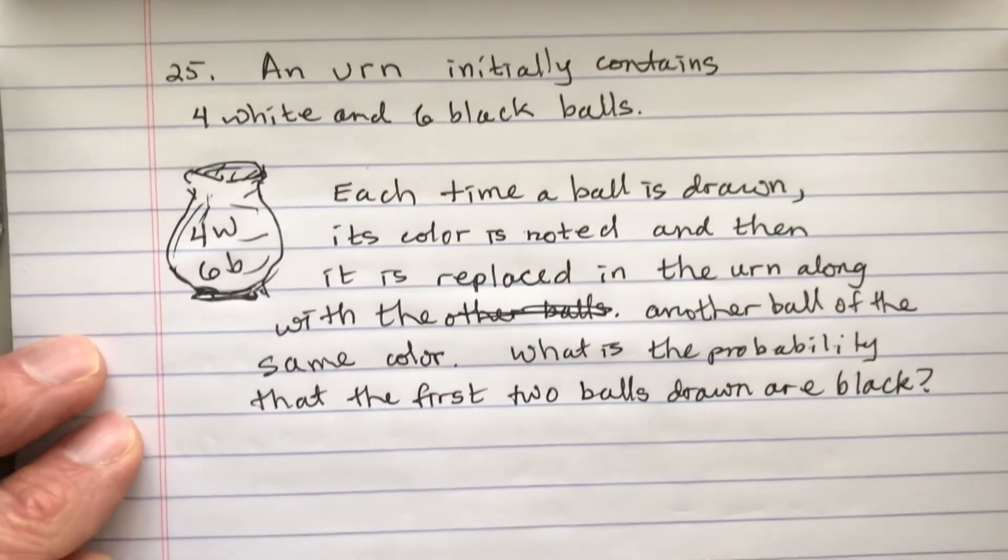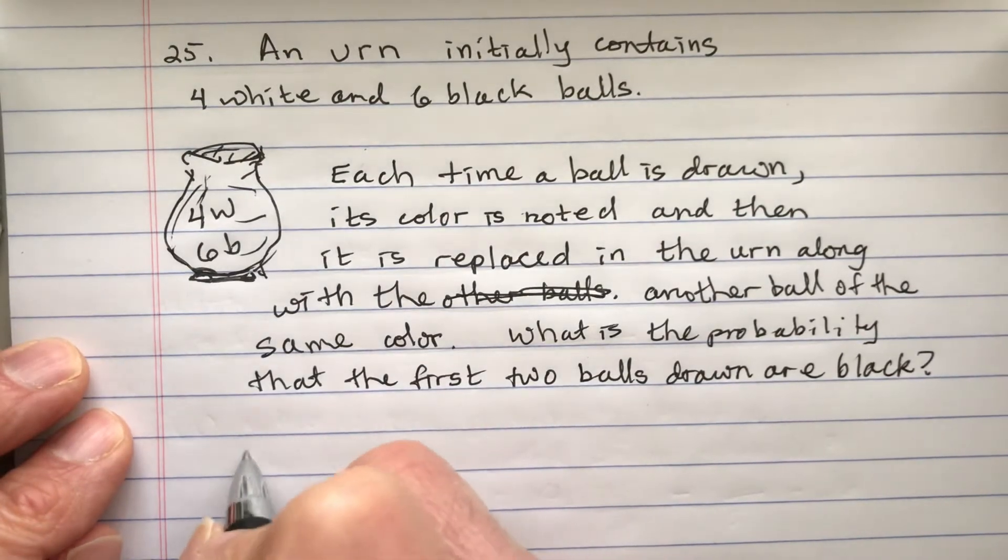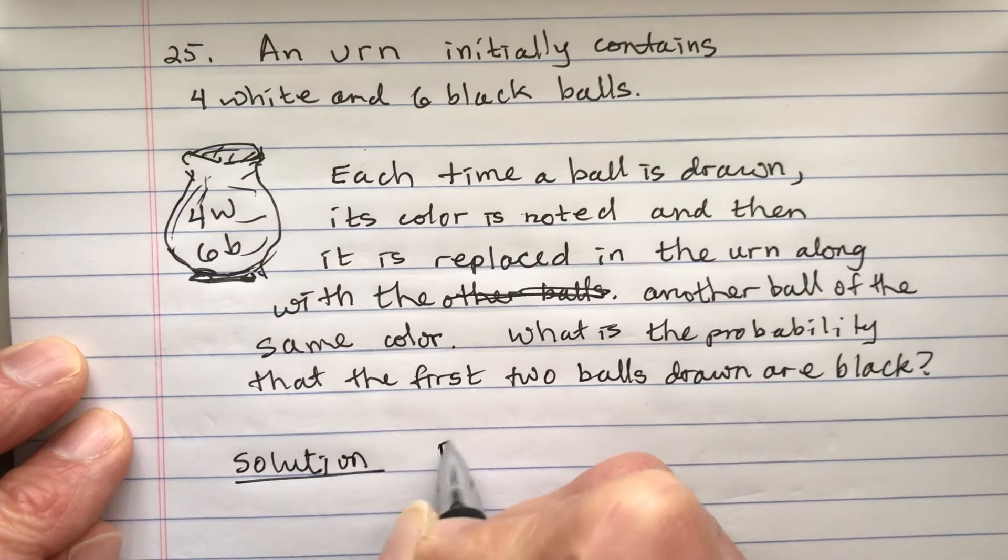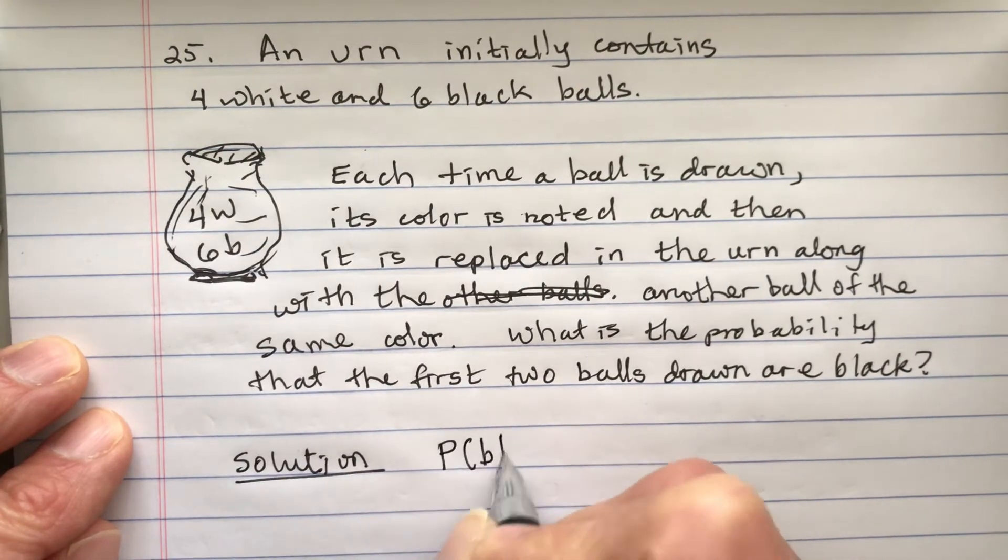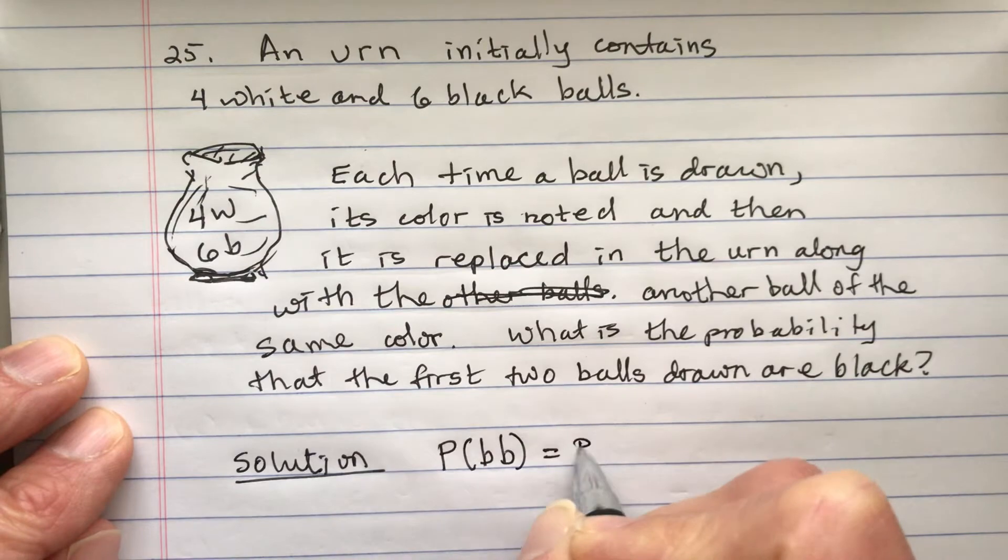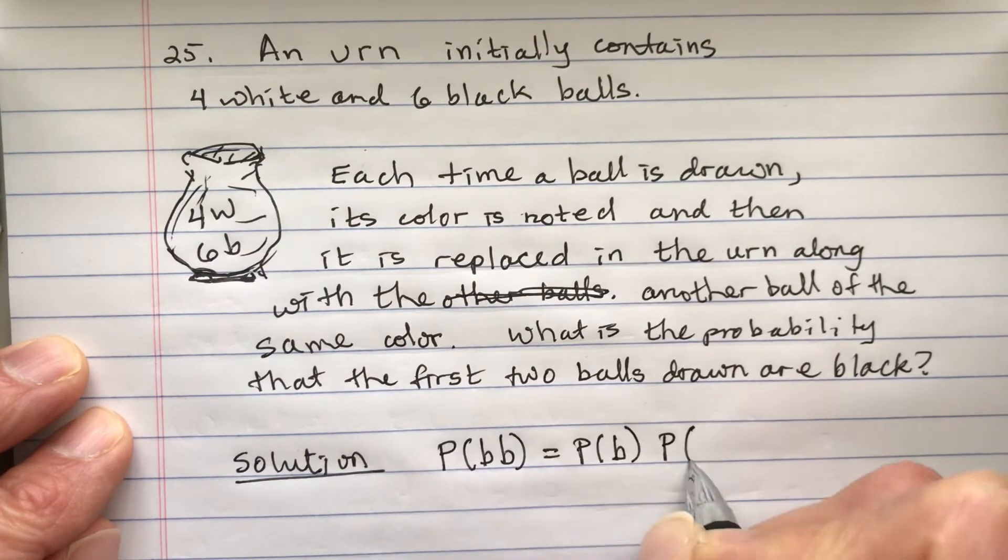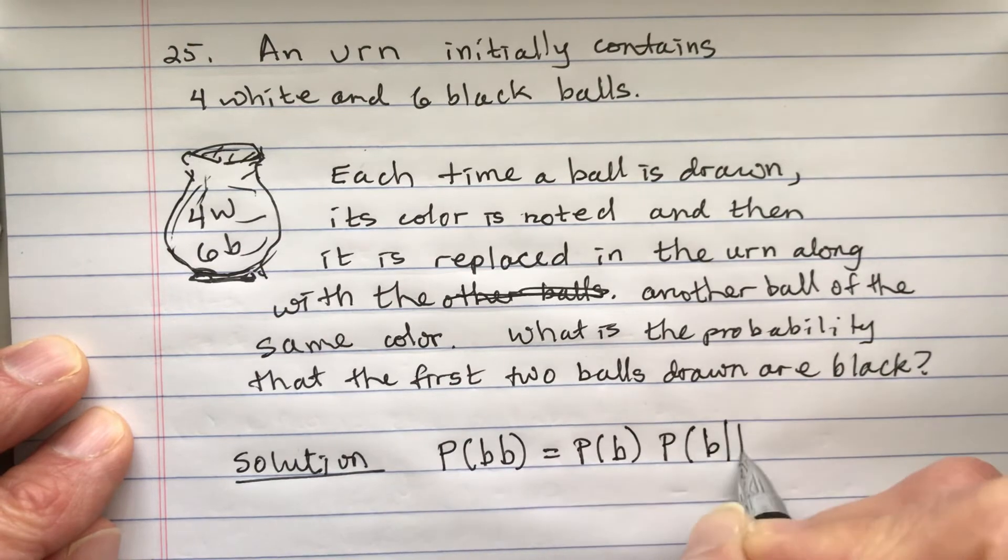Okay, so the solution is that we're going to look at the probability of black black, which is going to be the probability the first is black times the probability that we get a black given that the first is black.